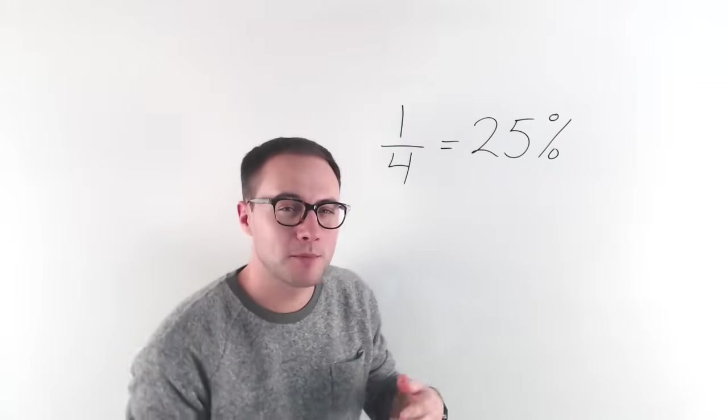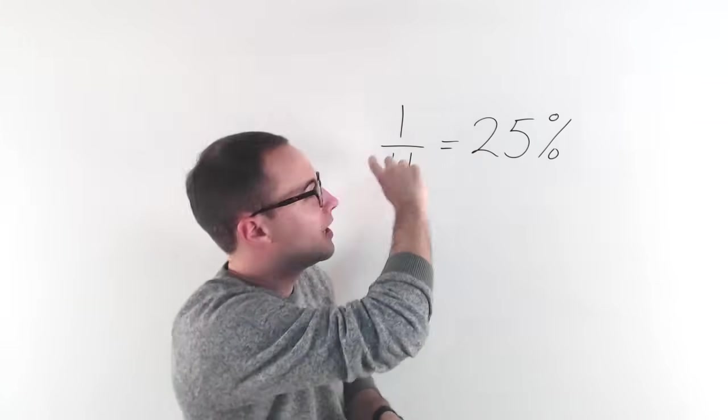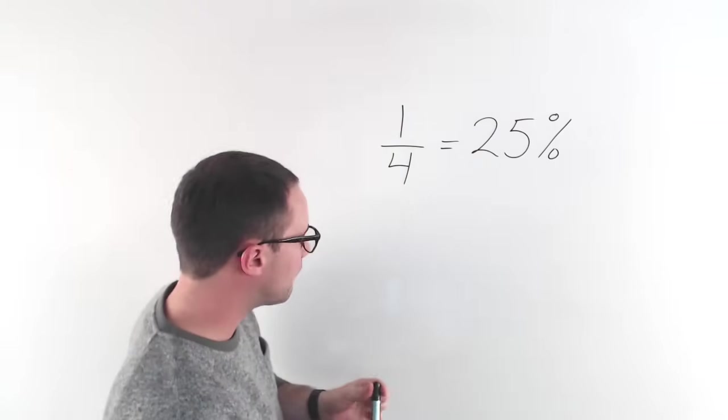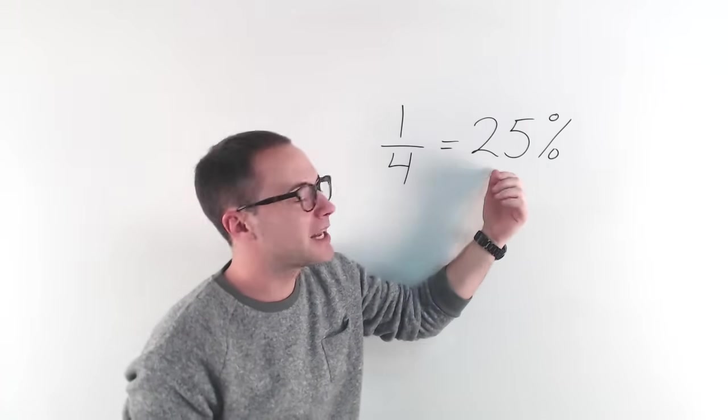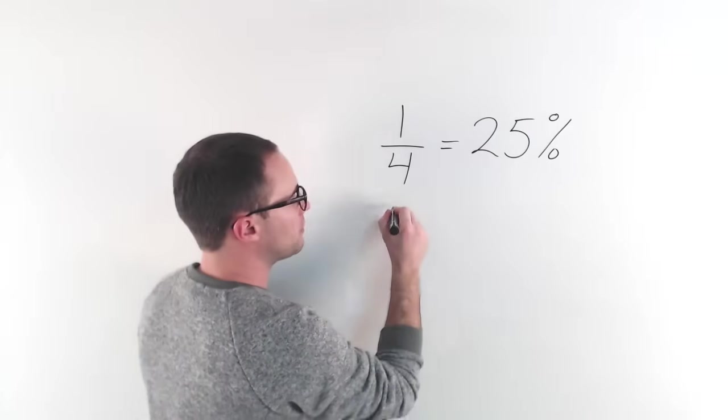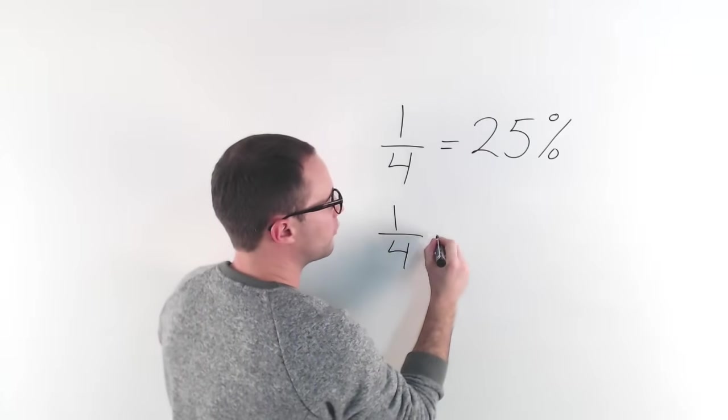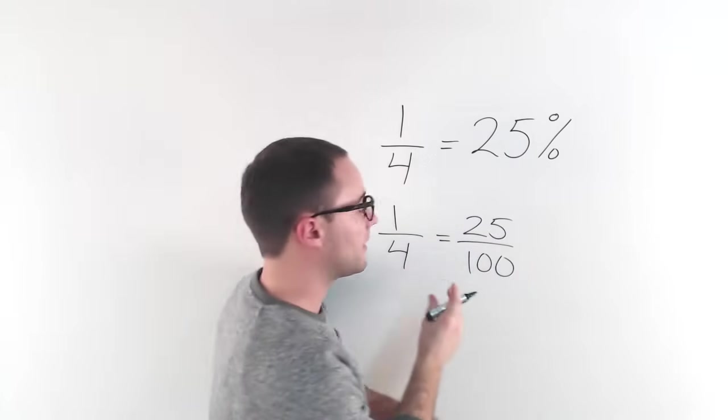The types of problems we're going to deal with now is finding different parts of this equation. Now first, we're going to be using proportions, so the first thing, instead of writing it as 25%, we're going to write it as a fraction. So that would become one-fourth equals 25 over 100. This is a proportion.